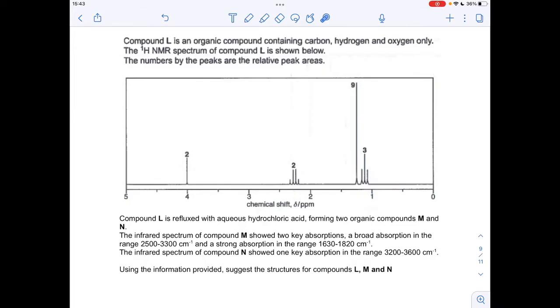From the infrared information, we know that M shows two key absorptions, so there's this broad absorption in that range there. Now, that's indicative of the OH of a carboxylic acid group, and we've also got a strong absorption in this range here, which indicates the presence of a C double bond O.